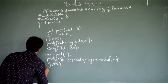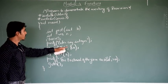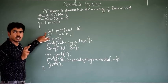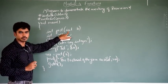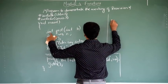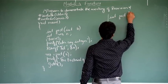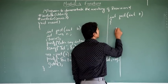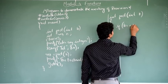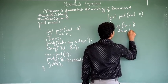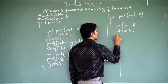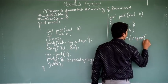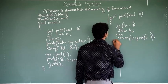The getch() function terminates the main program — this is the end of the main function. Now let me write the user-defined function, fact. Always remember: the first line of the function definition must be exactly similar to the function prototype. That is: int fact(int k). If k == 1, return k; else return k * fact(k - 1).